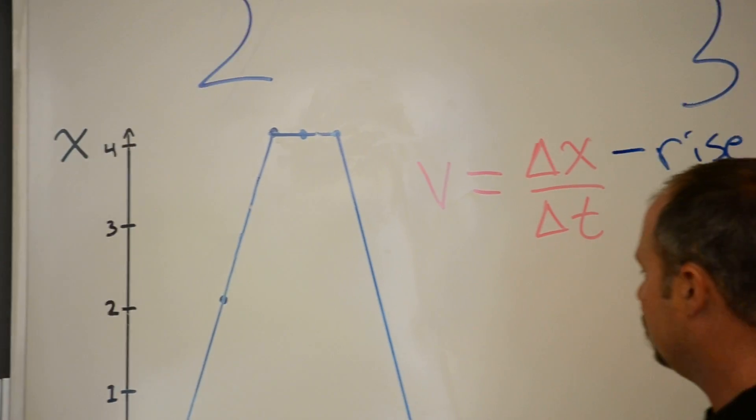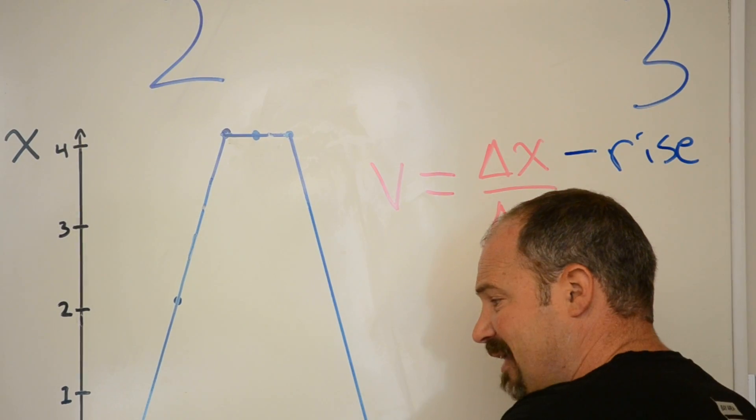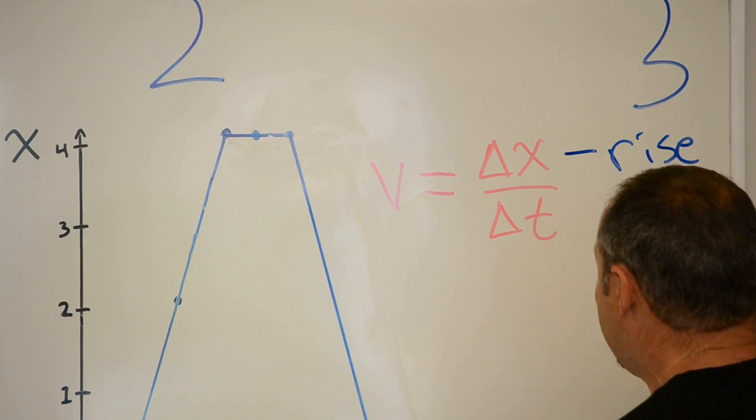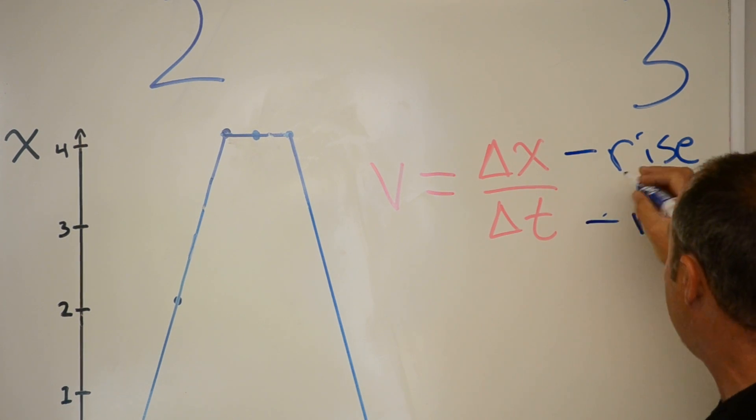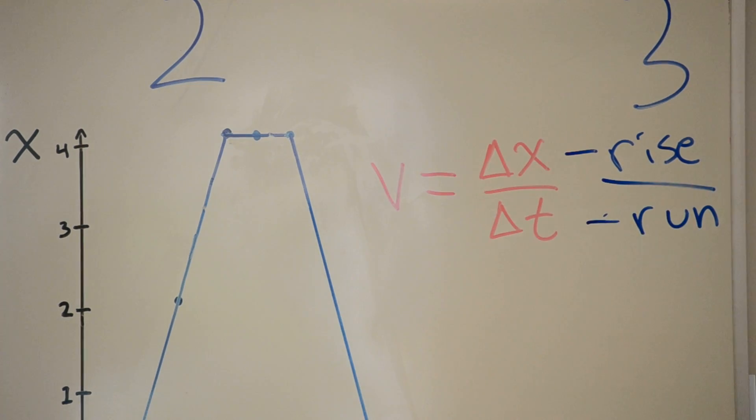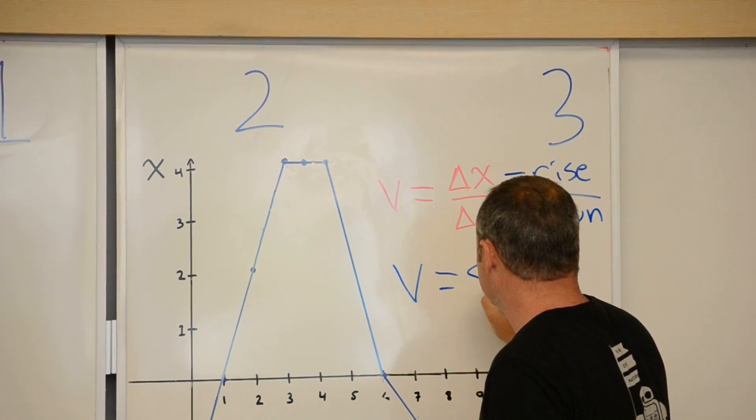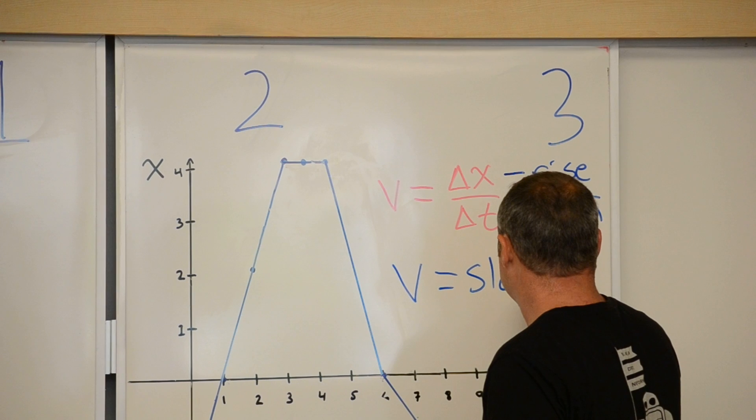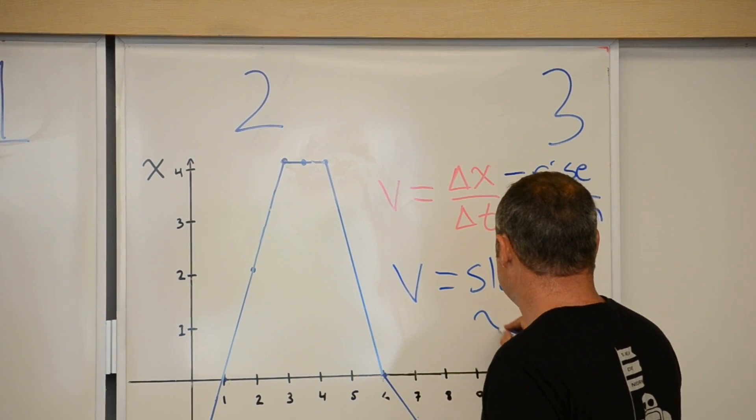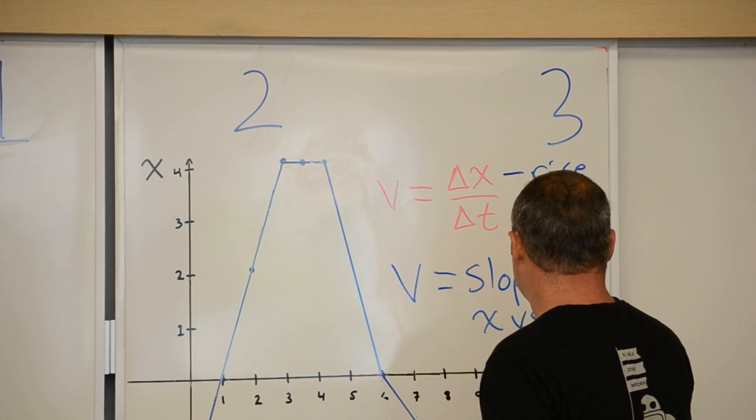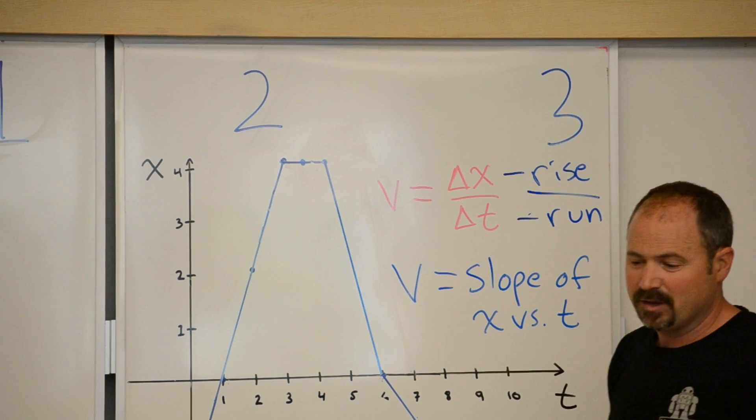The difference in the times, well, that's the run. That's the x-axis. So, this is run. Well, rise over run is the definition of slope. So, I know that the velocity is equal to the slope of the position versus time graph.